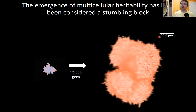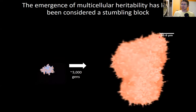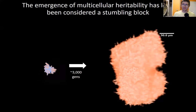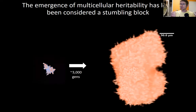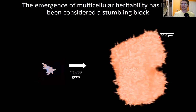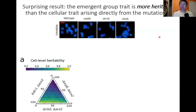This is all to say: what underpins the ability for snowflake yeast to undergo sustained Darwinian adaptation — not just one or two mutations, but over thousands of generations? This has long been considered a stumbling block because people assumed you need another level of regulation, like multicellular development, to coordinate morphogenesis. We're strictly in a regime of emergent biophysical properties. It turns out, to our surprise, that the emergent multicellular traits arising from cell-level property changes are very heritable.